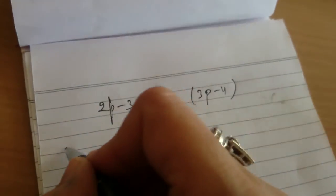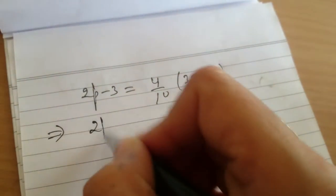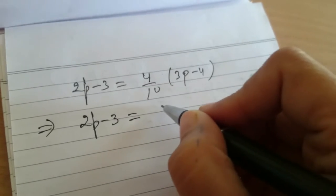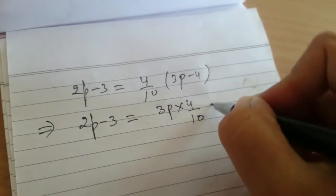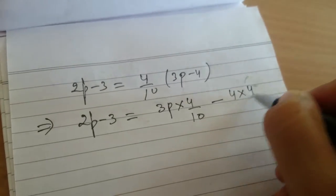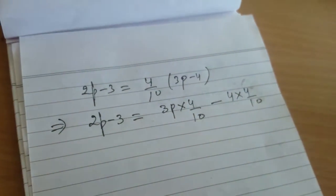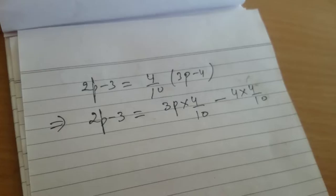How will you solve it? Implies, then 2p minus 3 equals to 3p multiplied by 4 upon 10 minus 4 multiplied by 4 upon 10. Which rule you have applied here? We have applied distributive rule over here.